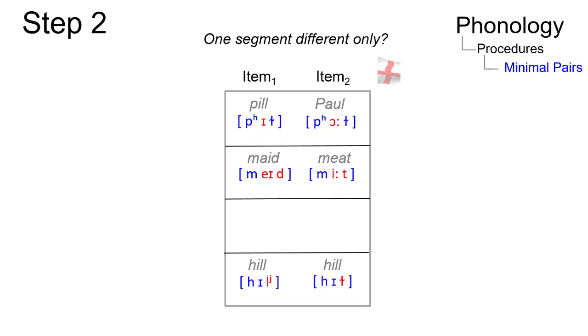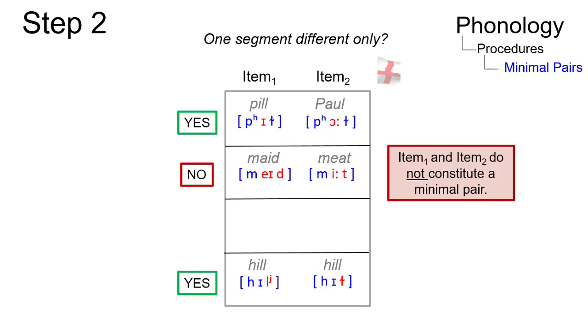Now look at the segments. If only one segment is different, we can proceed. Otherwise, we don't have a minimal pair.